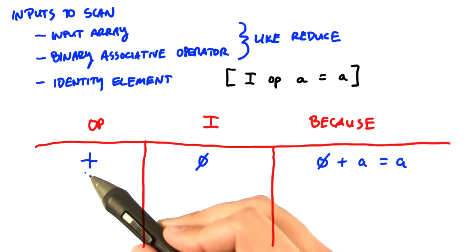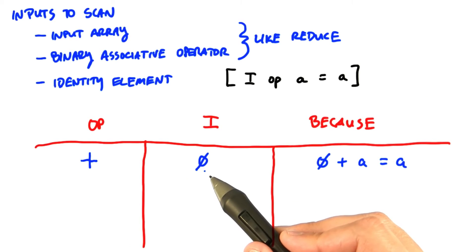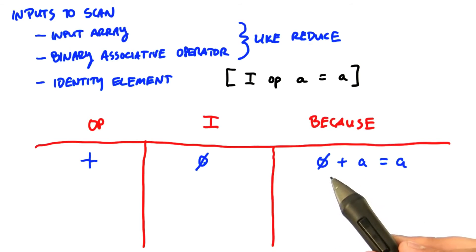For the binary associative operator addition, the identity element is 0, because if you add 0 to any value, you get back that value.